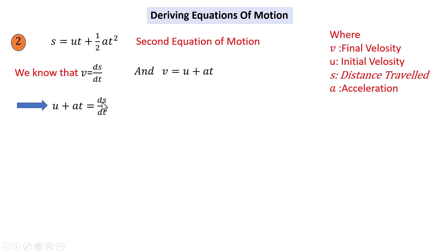If you take ds to the left-hand side, this equation becomes ds equals u plus at all times dt. If we simplify this equation more, we get ds equals u dt plus at dt.